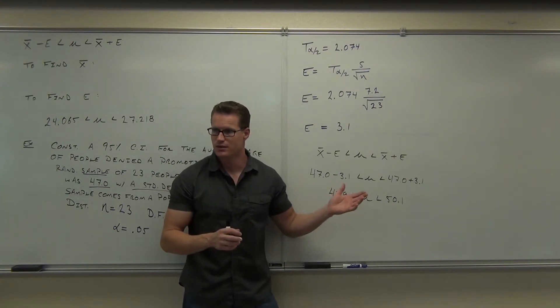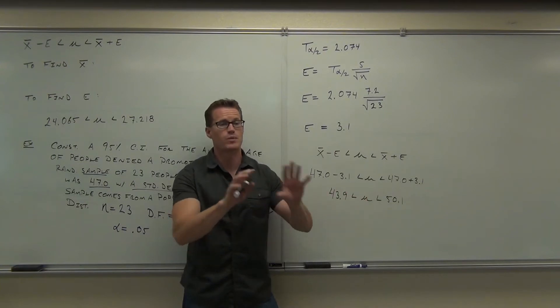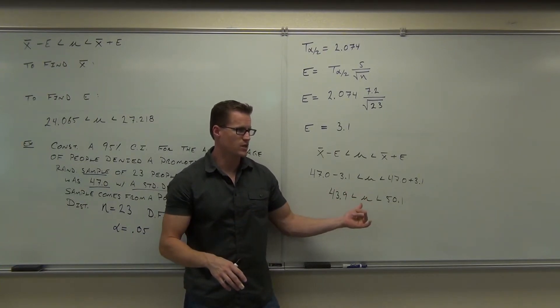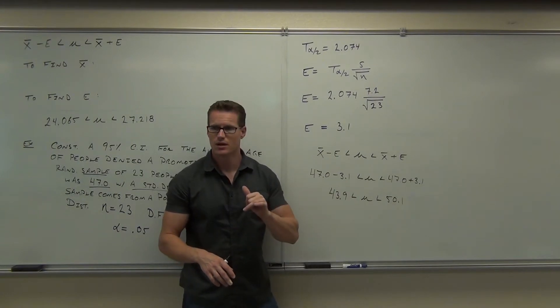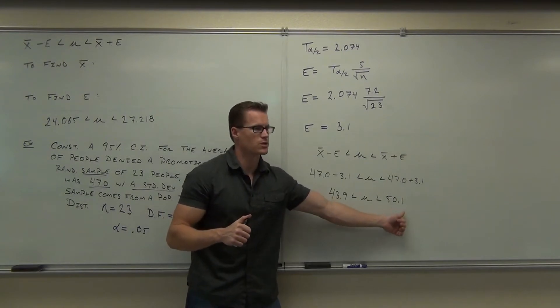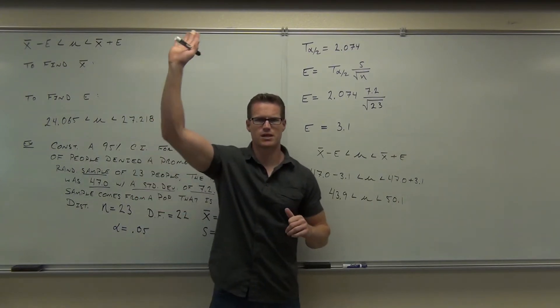But at least now you can find the interpretation and give the information to someone else to make those decisions. So again, the interpretation is, I don't know exactly what the population average is of people being denied a promotion, but I'm 95% sure it's going to fall within this range. That's the idea. How many of you understood this example?